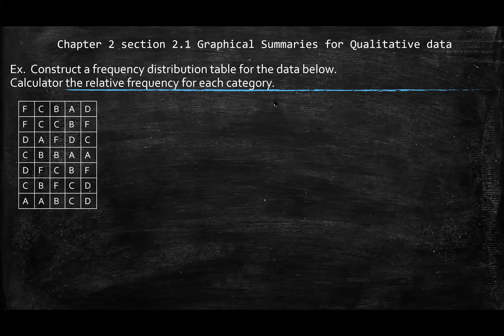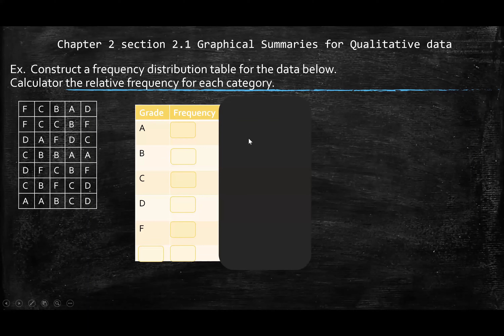Ordinal, because the letter grade has some ranking to it. Looking at this, they asked us to construct a frequency distribution table and calculate the relative frequency for each category. To construct the frequency distribution table, the first thing is we need to know how many different categories we have — in this case, my grades are my categories: A, B, C, D, E, F.